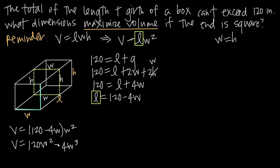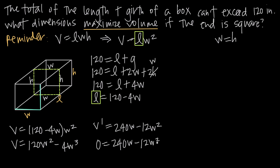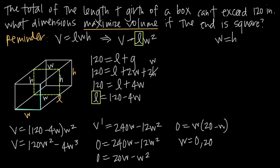Once we get to this stage, our next step is always to find the critical points of the volume function. We do this by taking the derivative and setting it equal to zero. So V′ = 240w − 12w². Setting that equal to zero: 0 = 240w − 12w². Dividing both sides by 12 gives 0 = 20w − w². Factoring out w: 0 = w(20 − w). By the zero product theorem, w = 0 or w = 20.